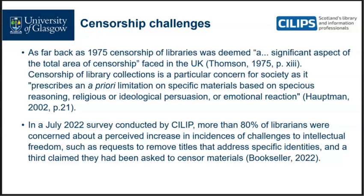This is not a new thing. Ashheim's article was from 1953, but as far back as 1975, censorship of libraries was deemed a significant aspect of the total area of censorship in the UK. Censorship of library collections is a particular concern for society, as Houtman says, because it prescribes an a priori limitation on specific materials based on specious reasoning, religious or ideological persuasion, or emotional reaction. And up to date: in a July 2022 survey conducted by CILIP, more than 80% of librarians were concerned about a perceived increase in incidences of challenges to intellectual freedom, such as requests to remove titles that address specific identities, and a third claimed they had been asked to censor materials directly — a significant and contemporary problem.